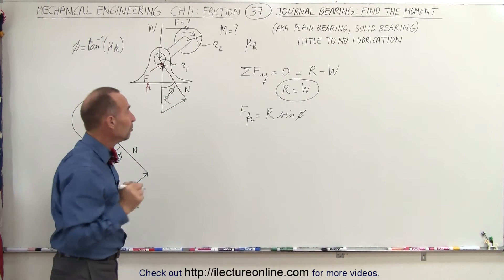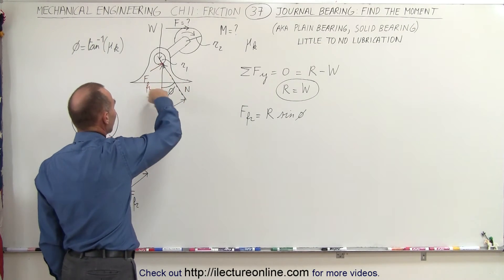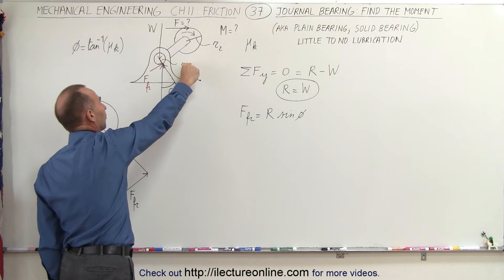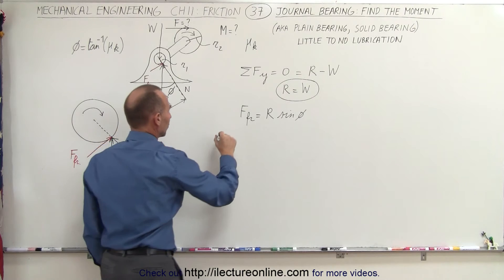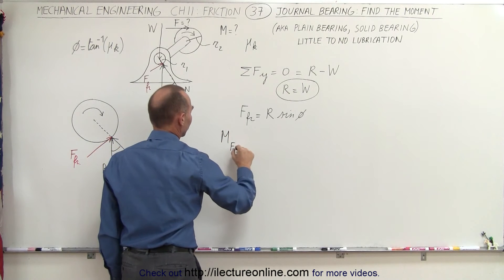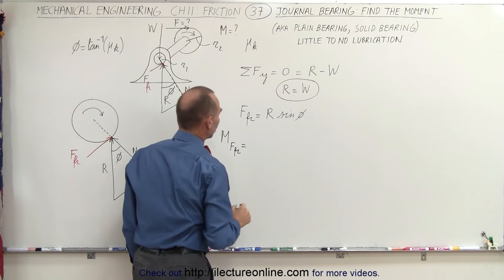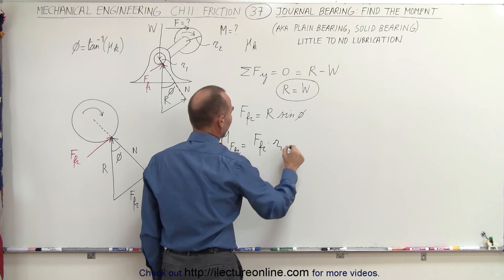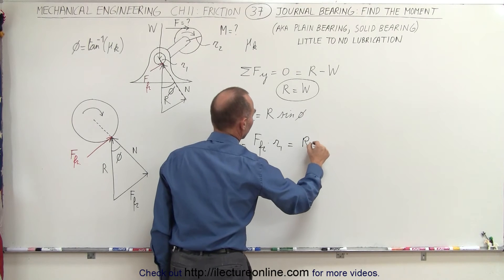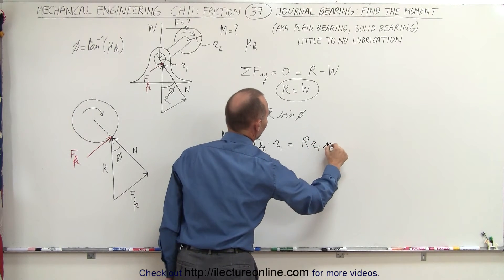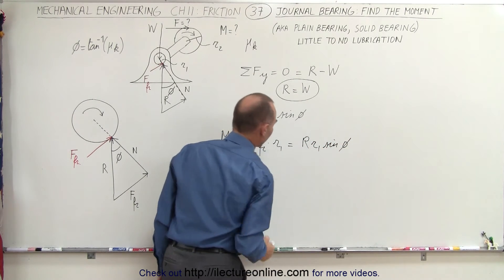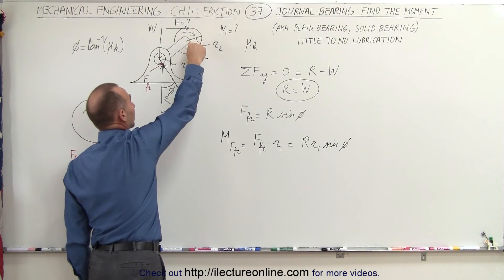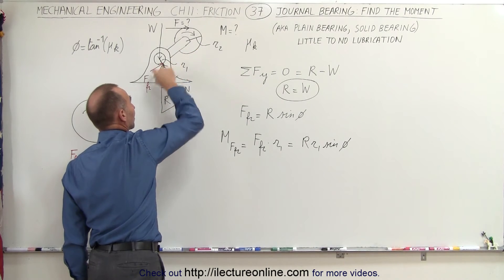To find the moment caused by the friction force, notice the friction force acts through radius r1, which is the radius of the axle. So the moment due to friction equals the friction force times r1, which becomes R × r1 × sin(φ). This is the moment on the wheel caused by friction on the axle.